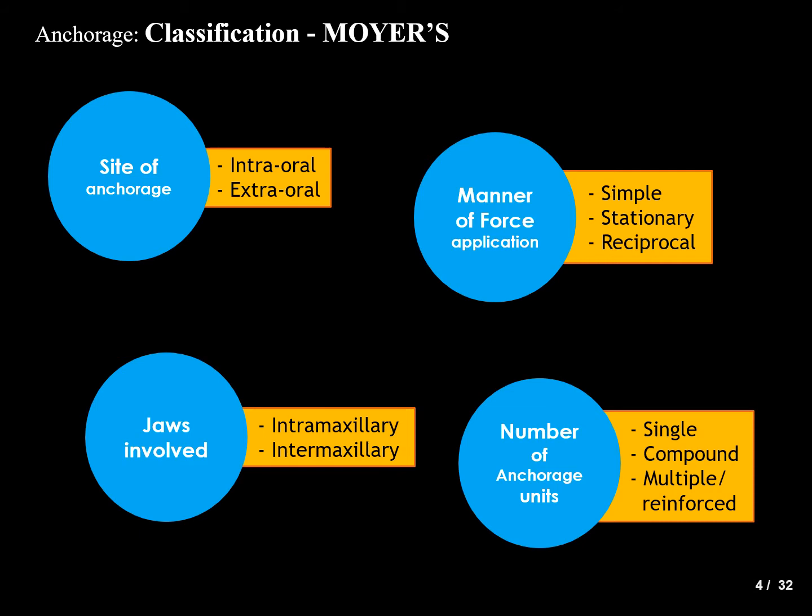We shall now go into the classification put forth by Moyers. Anchorage can be classified based on: the site of anchorage, the manner of force application, the jaws involved, and the number of anchorage units. Site can be intraoral or extraoral; manner of force application can be simple, stationary, or reciprocal; jaws involved can be intramaxillary or intermaxillary; and number of units can be single, compound, multiple, or reinforced.